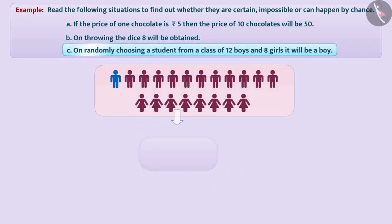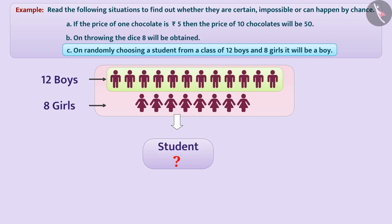On randomly choosing a student from a class of 12 boys and 8 girls, it will be a boy. Here definitely, the number of boys is more. But this does not mean that if a student is selected randomly, it will be a boy. It can also be a girl. That is, if a student is selected randomly, it will be a boy by chance.